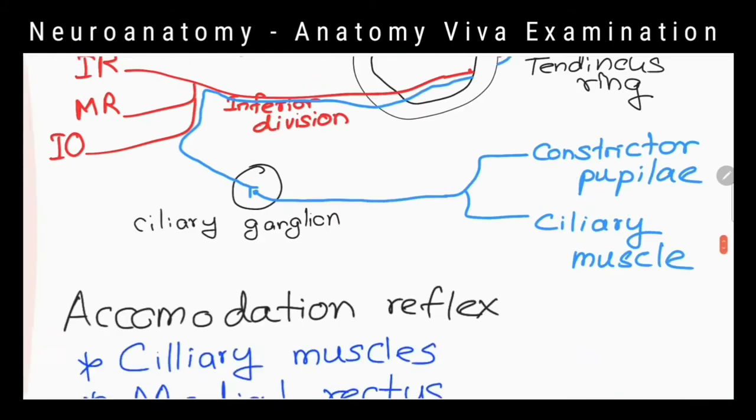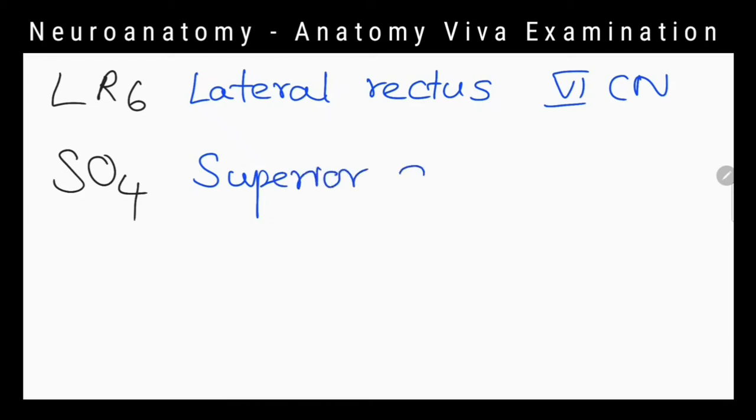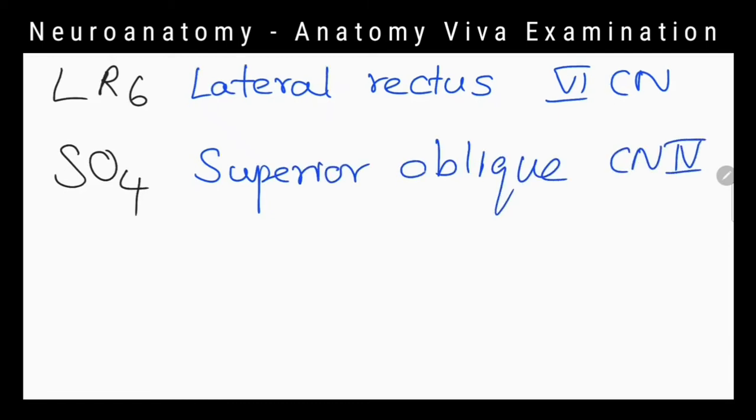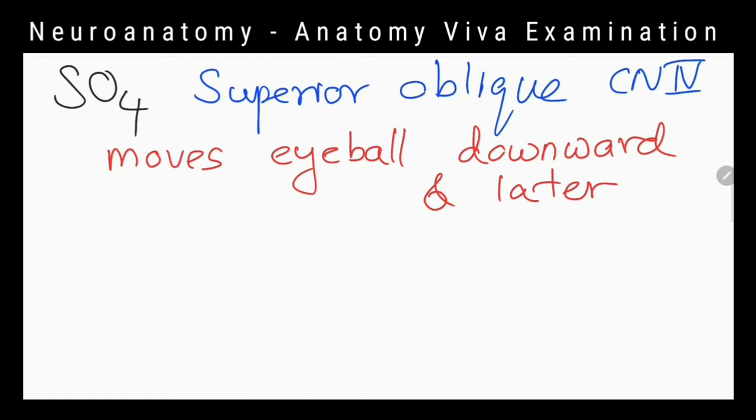You told about four extraocular muscles. What about the nerve supply of other two muscles? Superior oblique muscle is supplied by trochlear nerve. Lateral rectus muscle is supplied by abducent nerve. What is the action of superior oblique muscle? It moves eyeball downward and laterally.